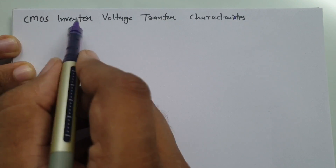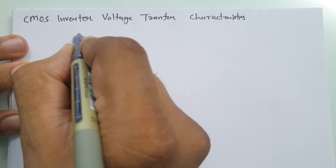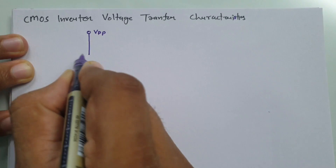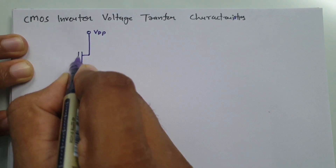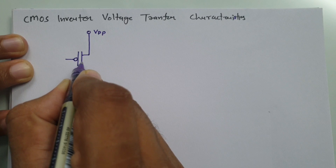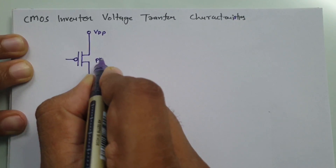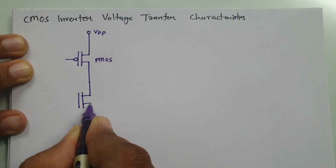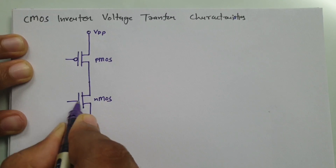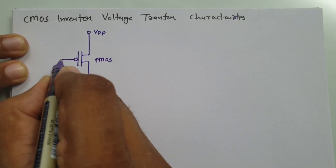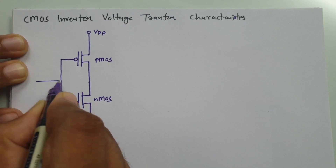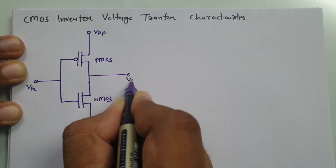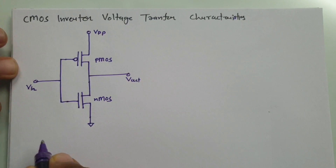I have already explained the basic circuit of the CMOS inverter. So let us have that circuit again. Here we have supply voltage VDD connected to PMOS — I am plotting PMOS by having a bubble over here. This is PMOS connected with NMOS, which has no bubble. The gate of both are connected together, where we give input, and over here we have output, and this terminal is grounded.